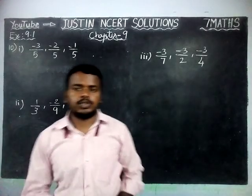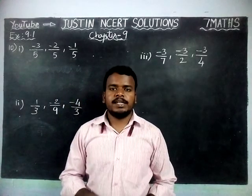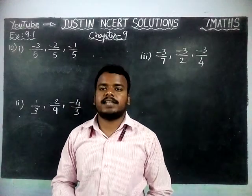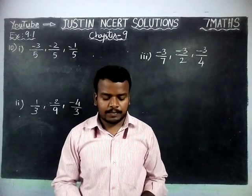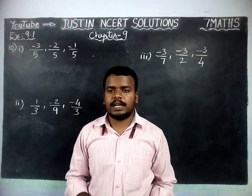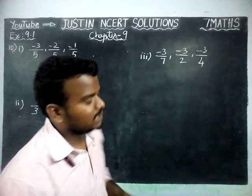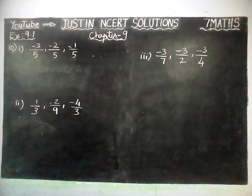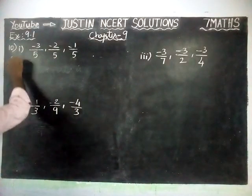Friends, welcome to Justine NCD Solutions. In this video, we are going to see 7th Maths Chapter 9, Exercise 9.1, Question 10. Write the following rational numbers in ascending order. We have to write from the smallest value to the highest value. We are going to write it one by one.